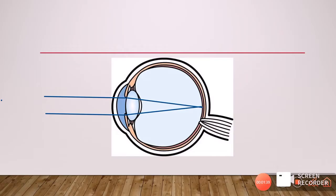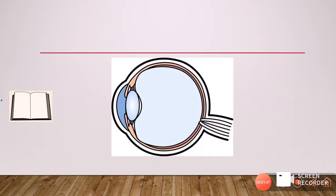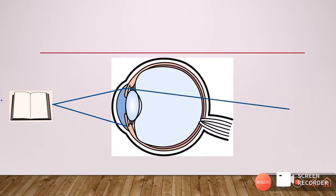Parallel rays of light always come from far, from infinity. However, whenever we look at a close object located very near to our eyeball, the rays coming from that object will be diverging in nature. So rays from far are parallel, but rays from a near object are diverging, and the eyeball will not be able to converge with its plus 60 diopters enough to bring focus onto the retina.